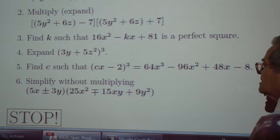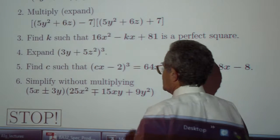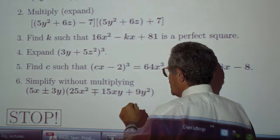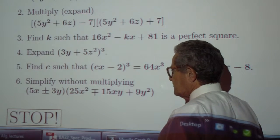Exercise 6, simplify without multiplying. And you have the identities that we've seen before.